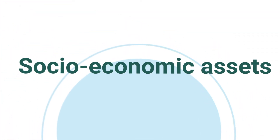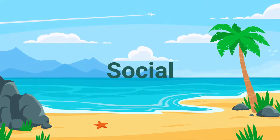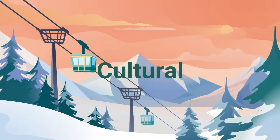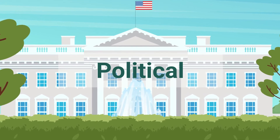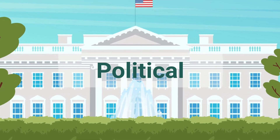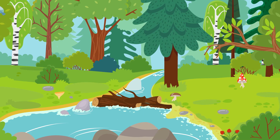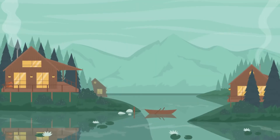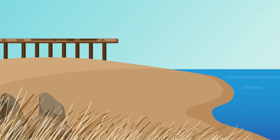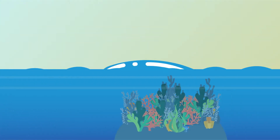Socio-economic assets are natural or anthropogenic entities that provide social, cultural, economic, or political significance, which may have direct economic value. This includes the provision of non-timber forest products from forests, tourism revenue from hotels, or indirect benefits such as coastal protection provided by coral reefs.